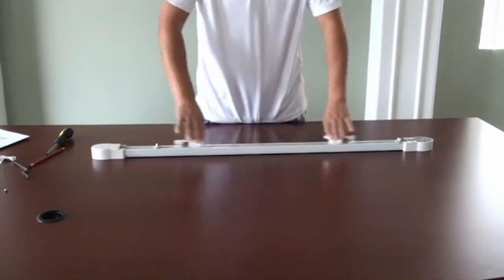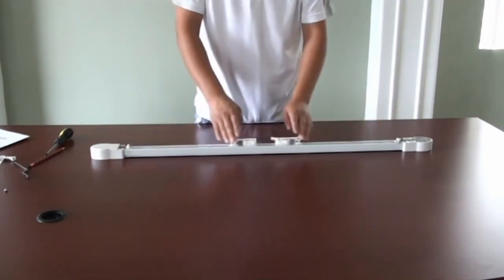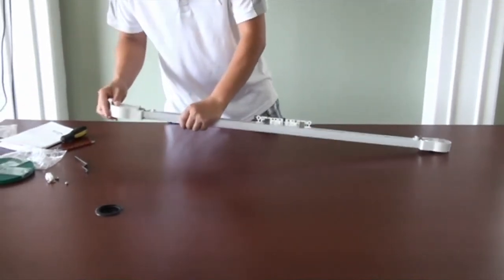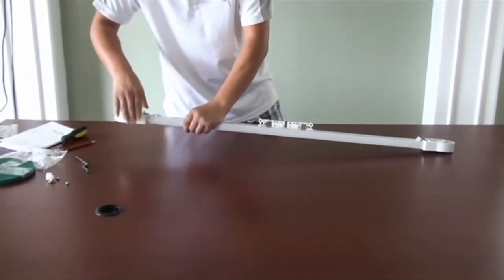It is very important to make sure that the belt is at a proper length. Having a belt that is too loose or too tight inside of the track will affect the movement and could potentially damage the belt.